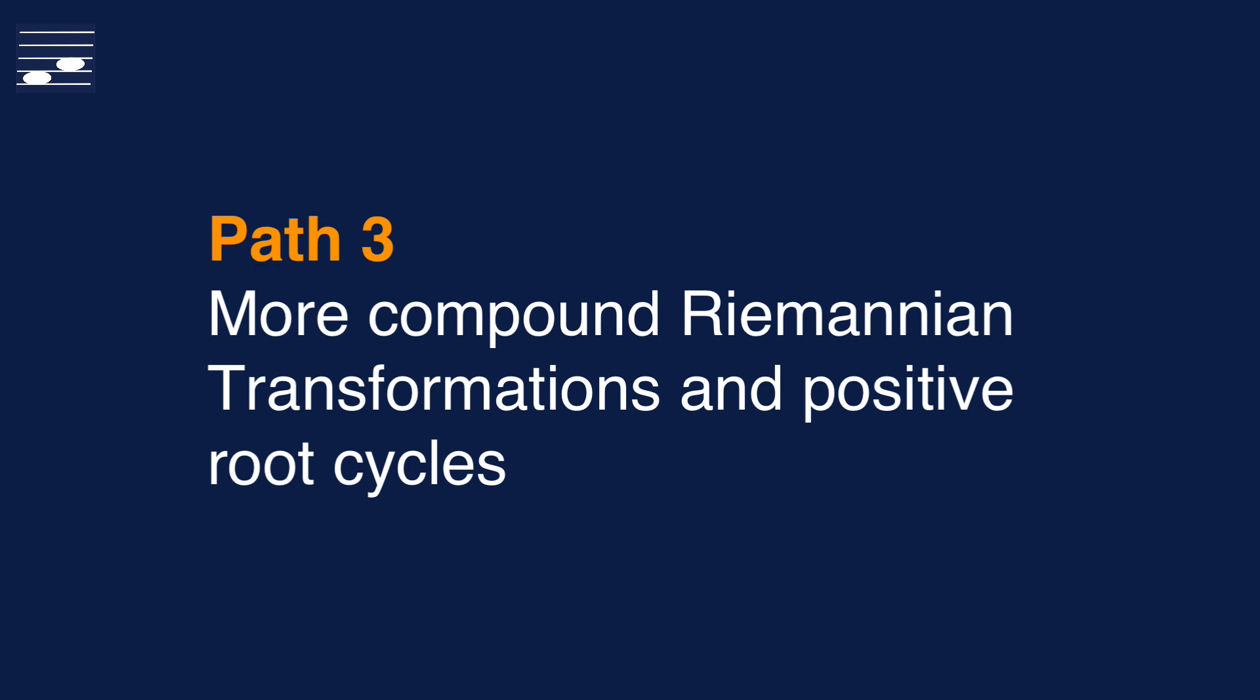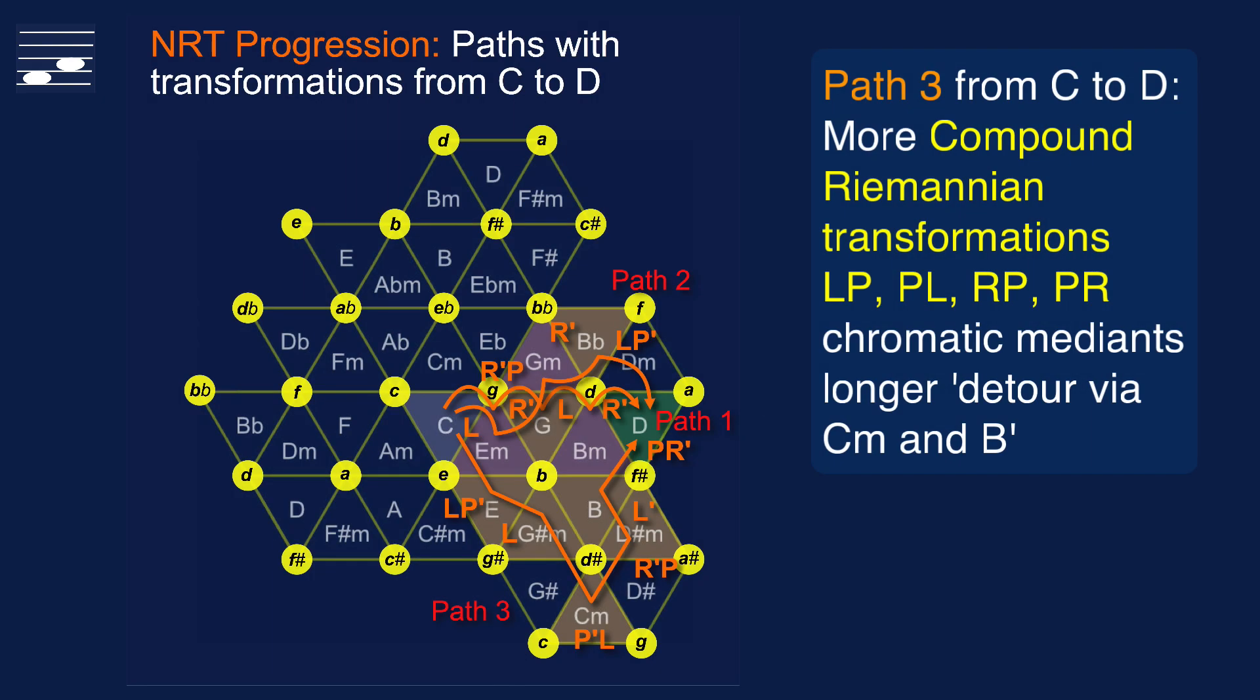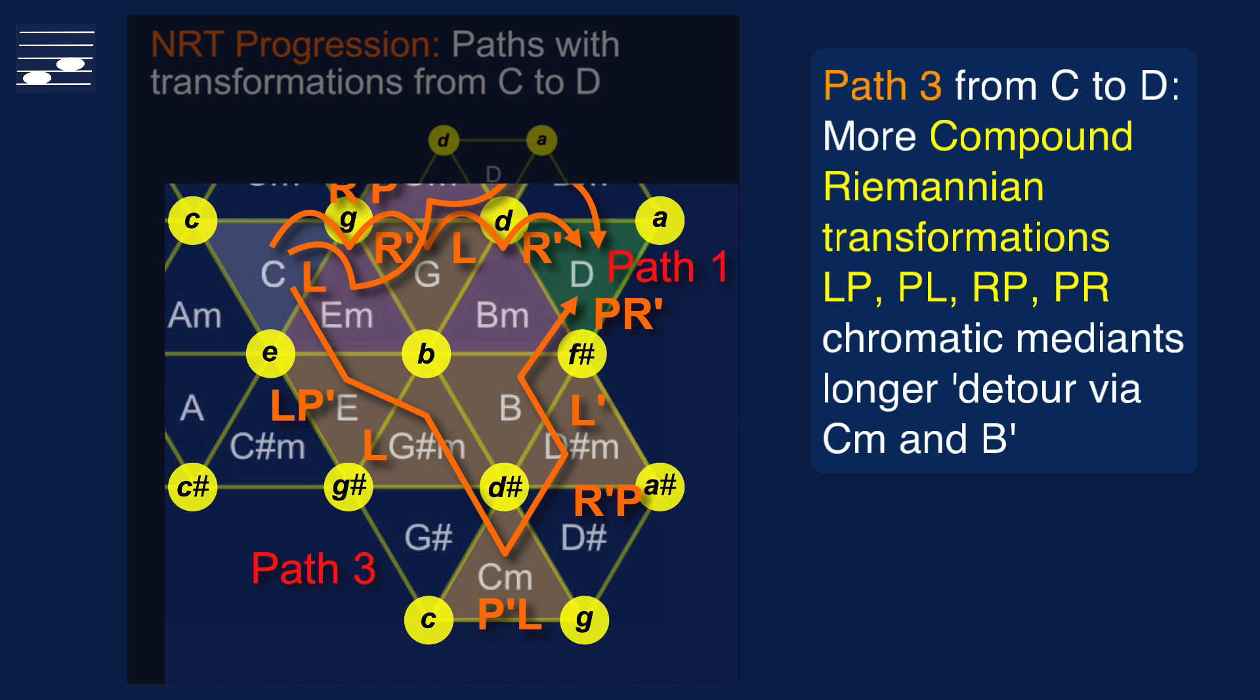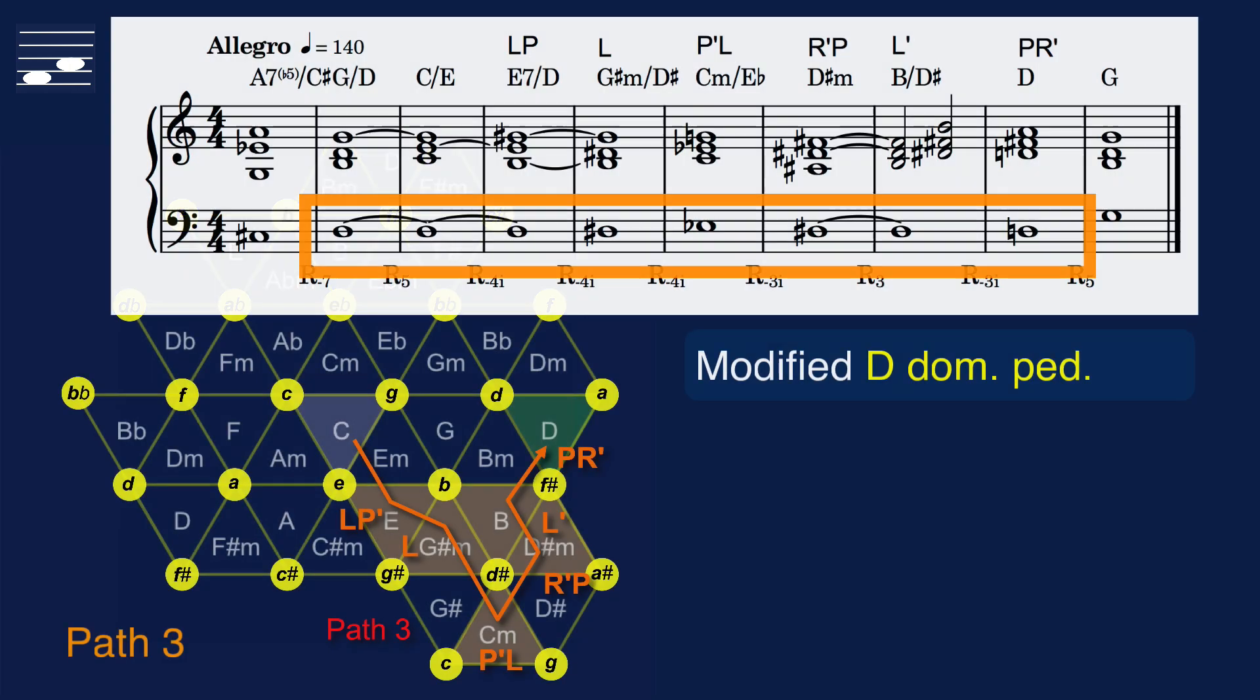In path number 3, there is the deliberate addition of a positive root cycle, while increasing the number of compound Riemannian transformations in the progression. As you can see here, we take a considerably longer detour with four compound and two simple transformations. On the way we pass through the fourth degree the subdominant C minor triad and the remote key of B major. With a given series of chords in the progression, the bass pedal point needs modification, moving to the neighboring node D-sharp or E-flat before the stepwise descending return to D.